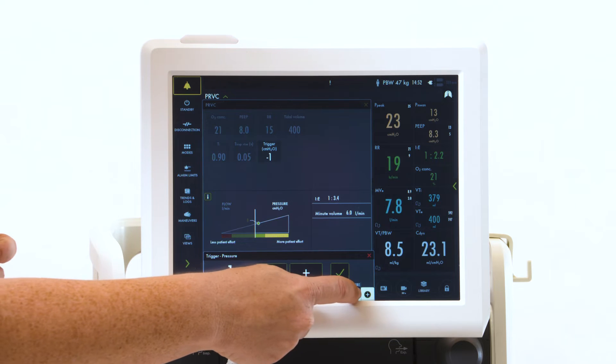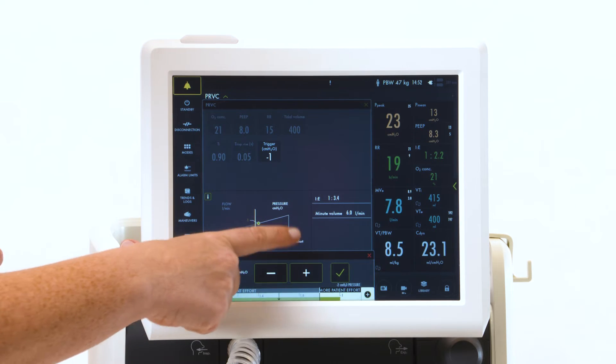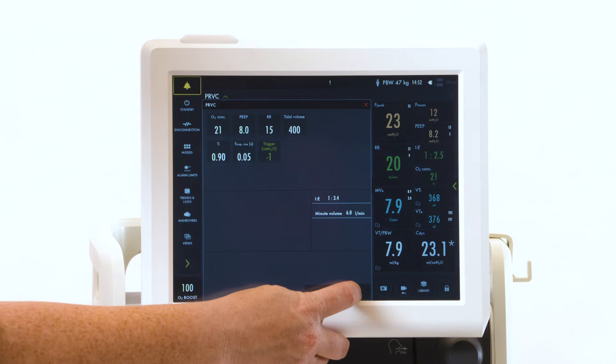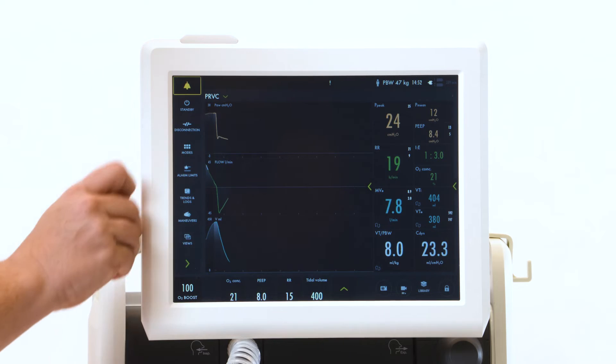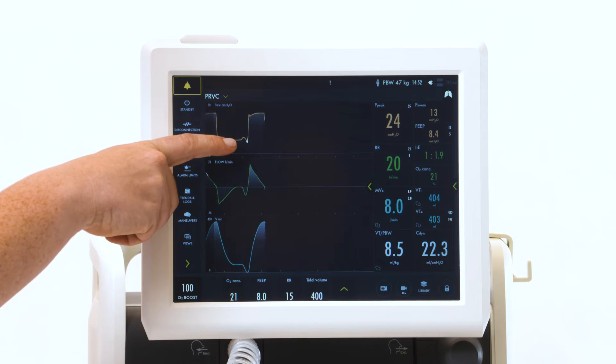Here, you can then slide over to the pressure side, indicating more patient effort, and check mark to confirm. Now, you will see the deflection on the pressure scaler.